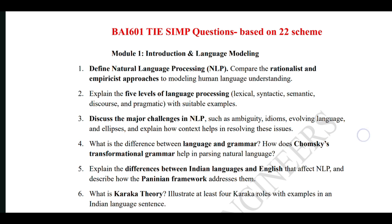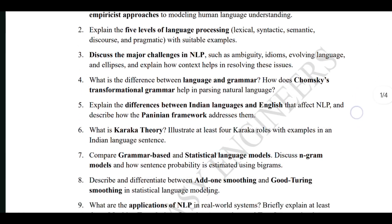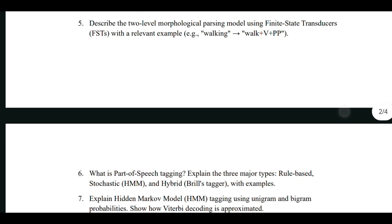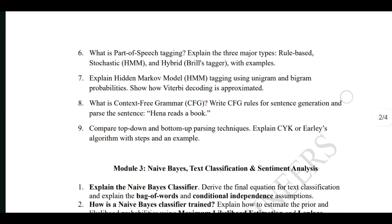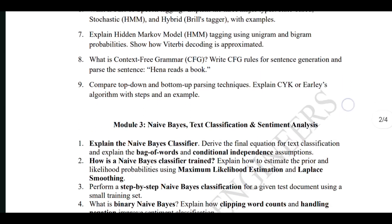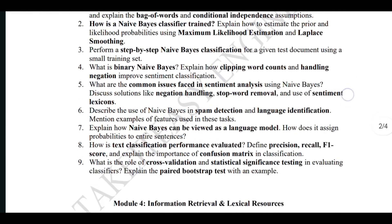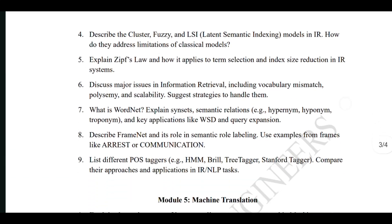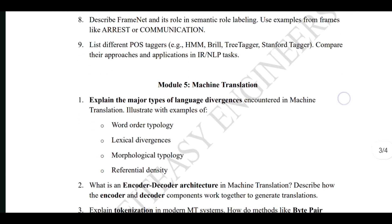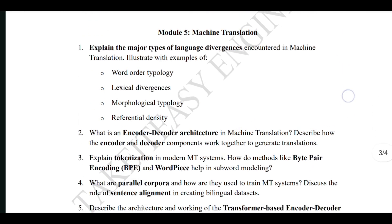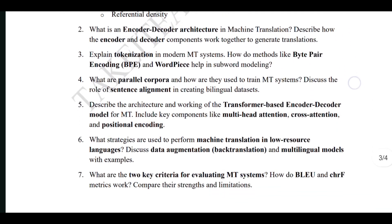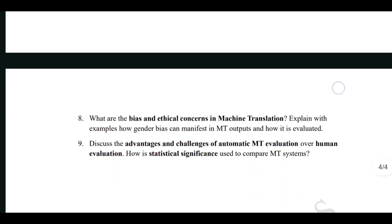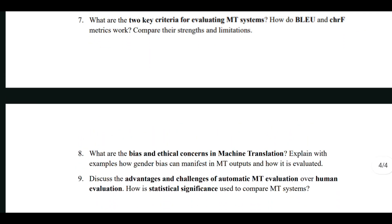Main Rules While Attempting Answers in the Exam: 1. Start with the best three questions you know, write them neatly and attractively. 2. If a diagram is required, draw it clearly and in a large size. 3. For the remaining two modules, write them in a normal but presentable manner. 4. Attempt all questions from the chosen slot in each module. 5. If you're unsure about any answer, attempt it at the end — don't leave it blank.